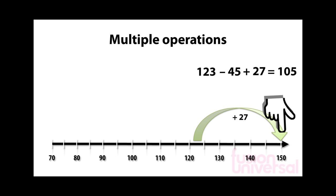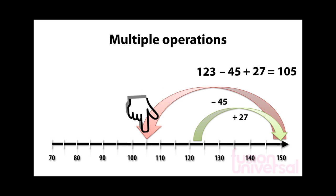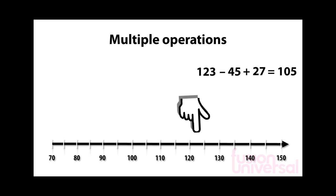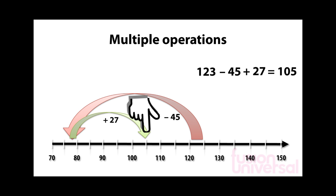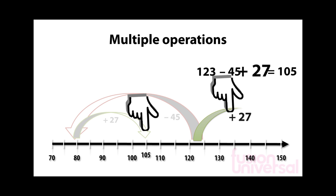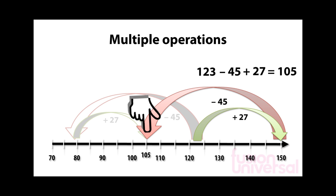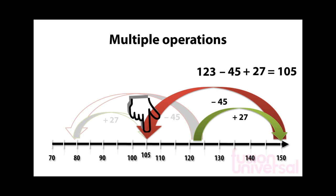From here we then take away 45. Again, this is easy, giving us 105 as the answer. Of course, the answer will be the same whichever way we choose to go. 123 subtract 45 plus 27 is equal to 105, and 123 plus 27 subtract 45 is equal to 105. But in this case, 123 plus 27 subtract 45 is a lot easier to do.